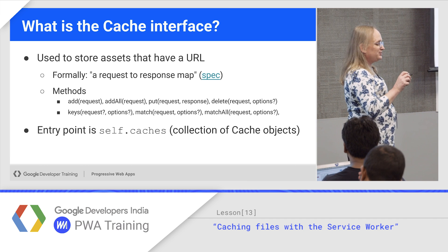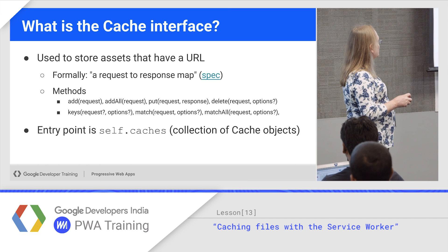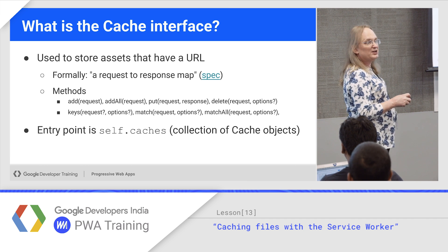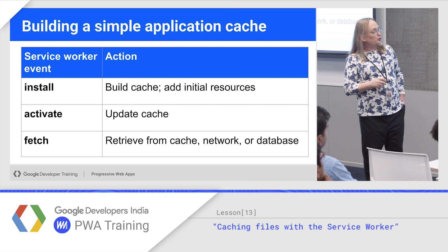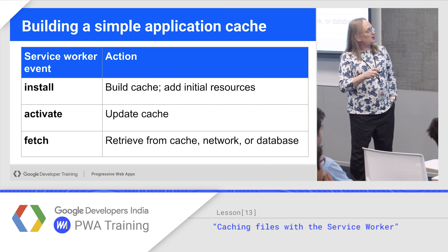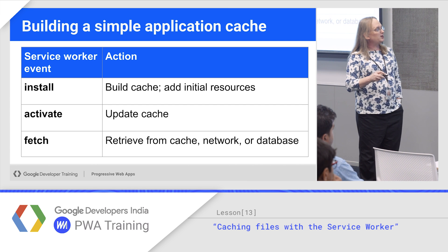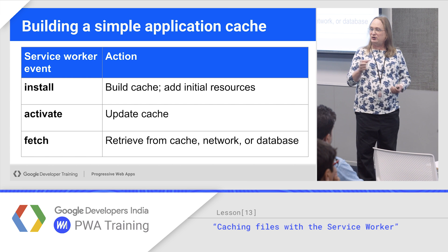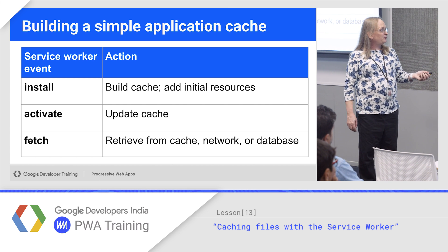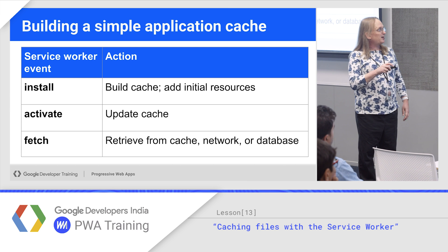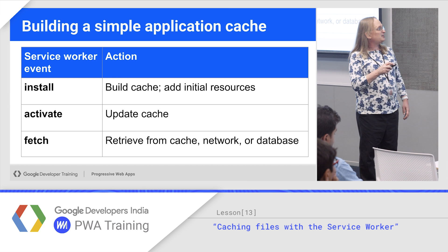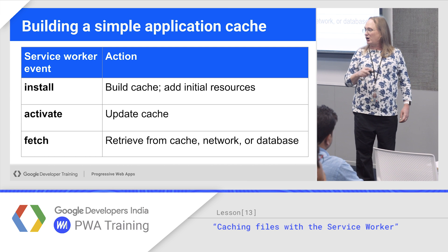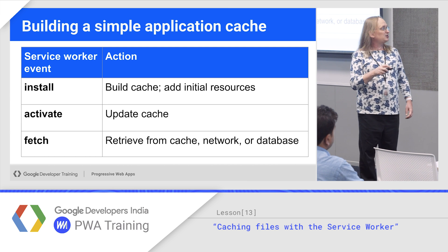Now there is more than one cache. self.caches will actually have a collection of cache objects. The rule we said is: on install in the service worker, build the cache and load your initial stuff. On activate, when you update the cache, you add anything new and remove anything old. On fetch, you can retrieve from cache, network, or database. On install, don't delete things — only add things. You can delete them on activate.